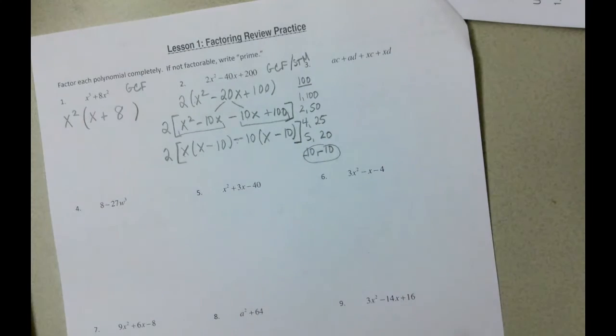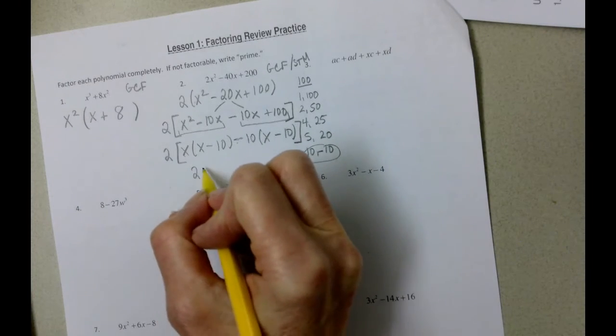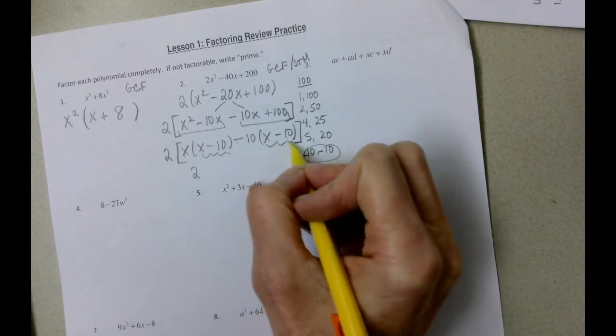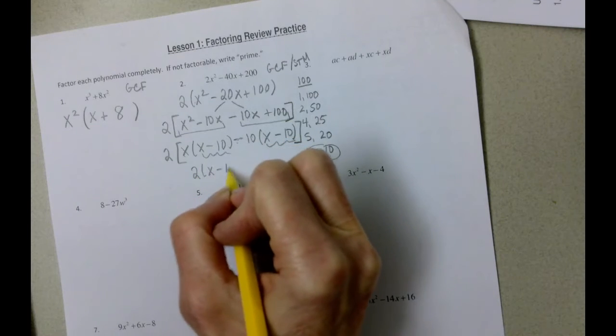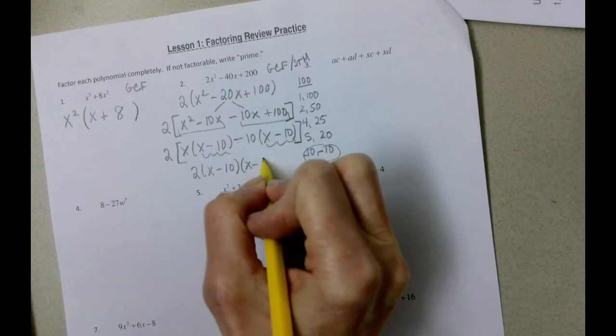And now we can finish the problem. We still have this two. Then we have an x minus ten and an x minus ten.